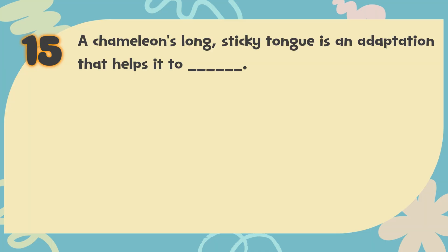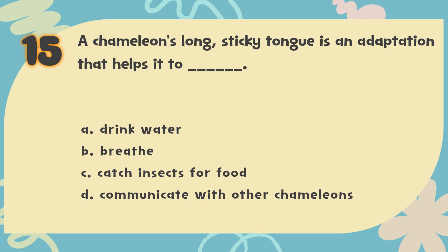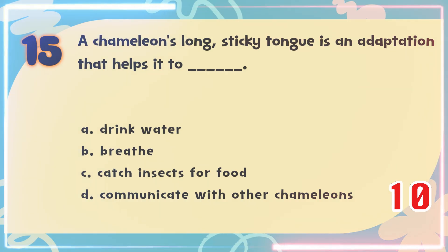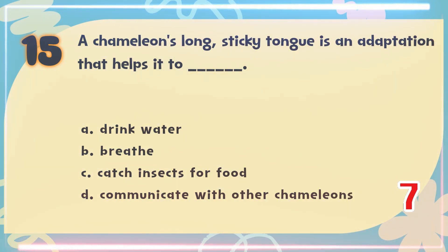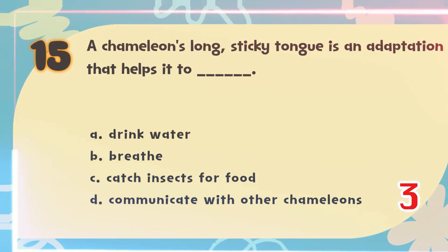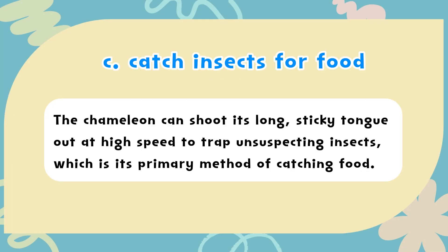Number 15. A chameleon's long, sticky tongue is an adaptation that helps it to blank. The choices are: A. Drink water, B. Breathe, C. Catch insects for food, D. Communicate with other chameleons. The correct answer is C. Catch insects for food. The chameleon can shoot its long, sticky tongue out at high speed to trap unsuspecting insects, which is its primary method of catching food.